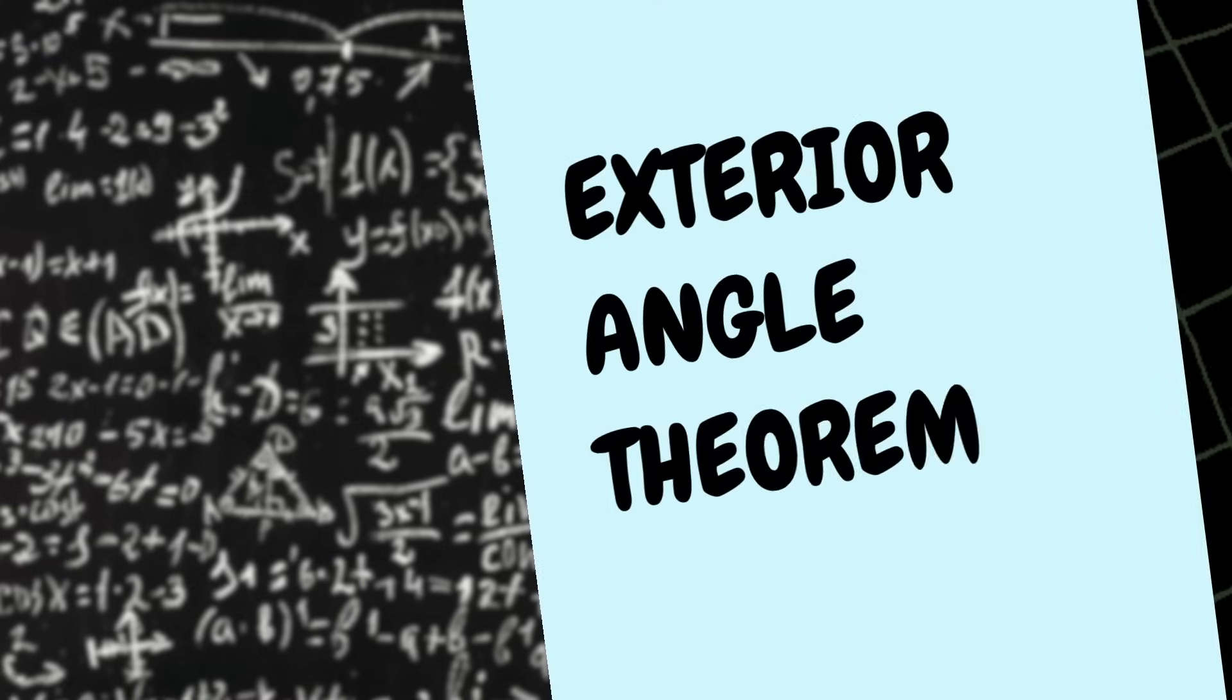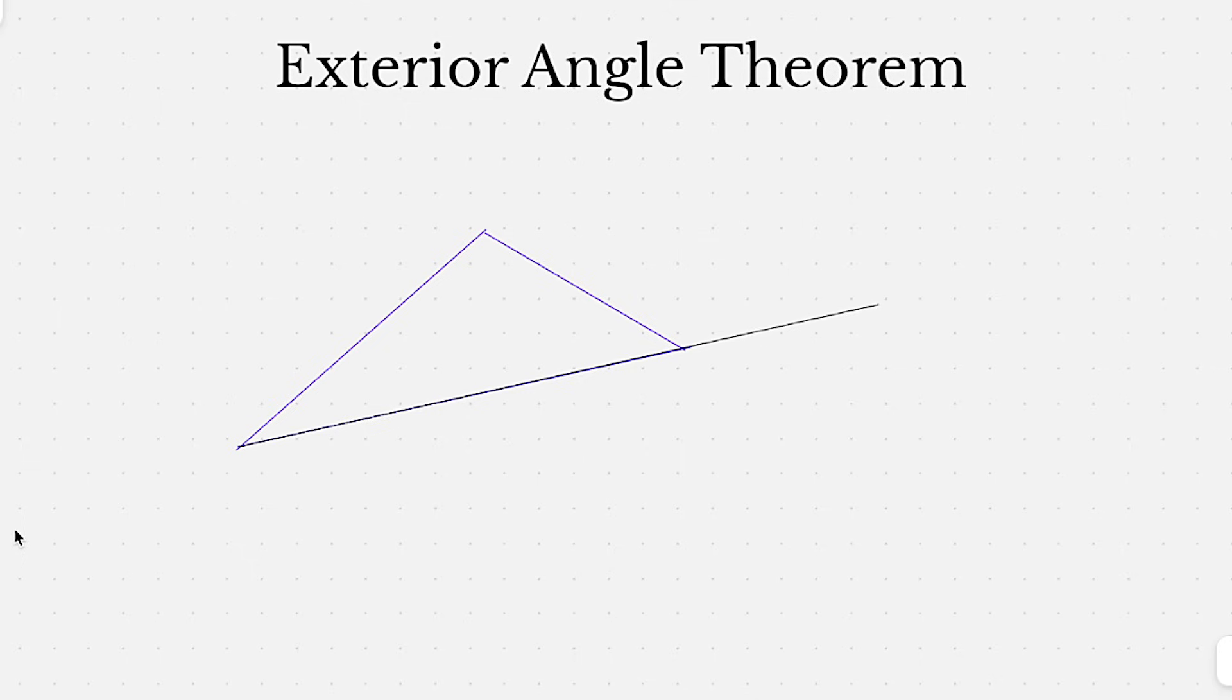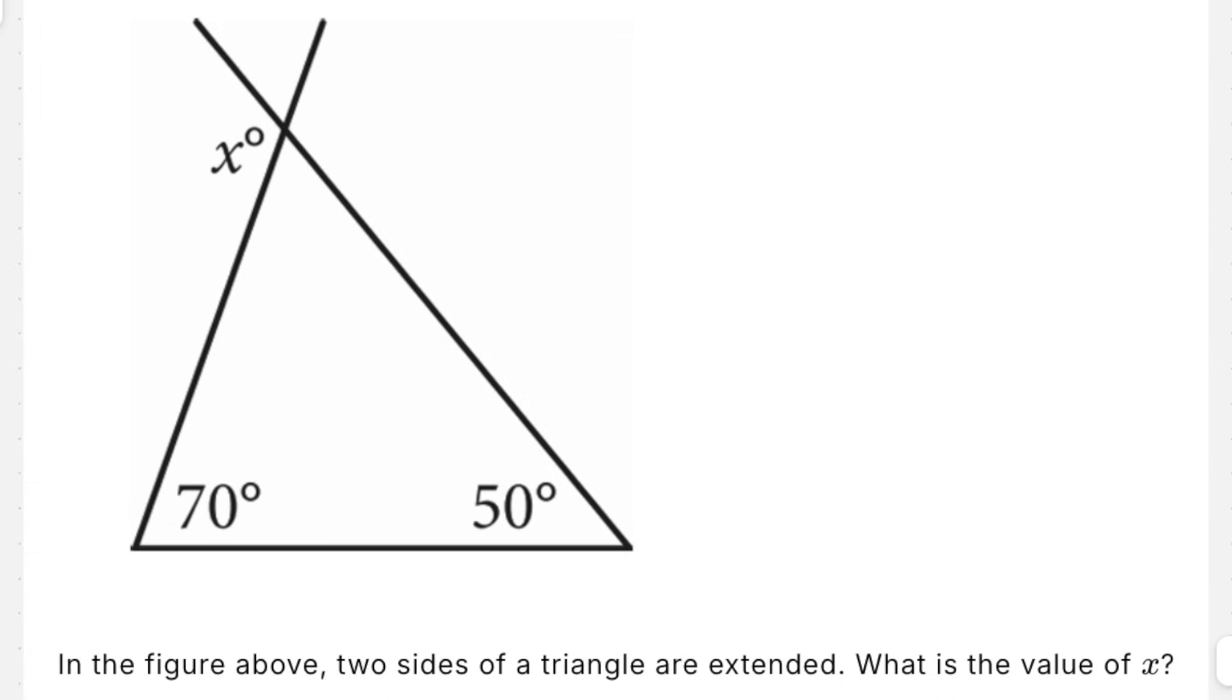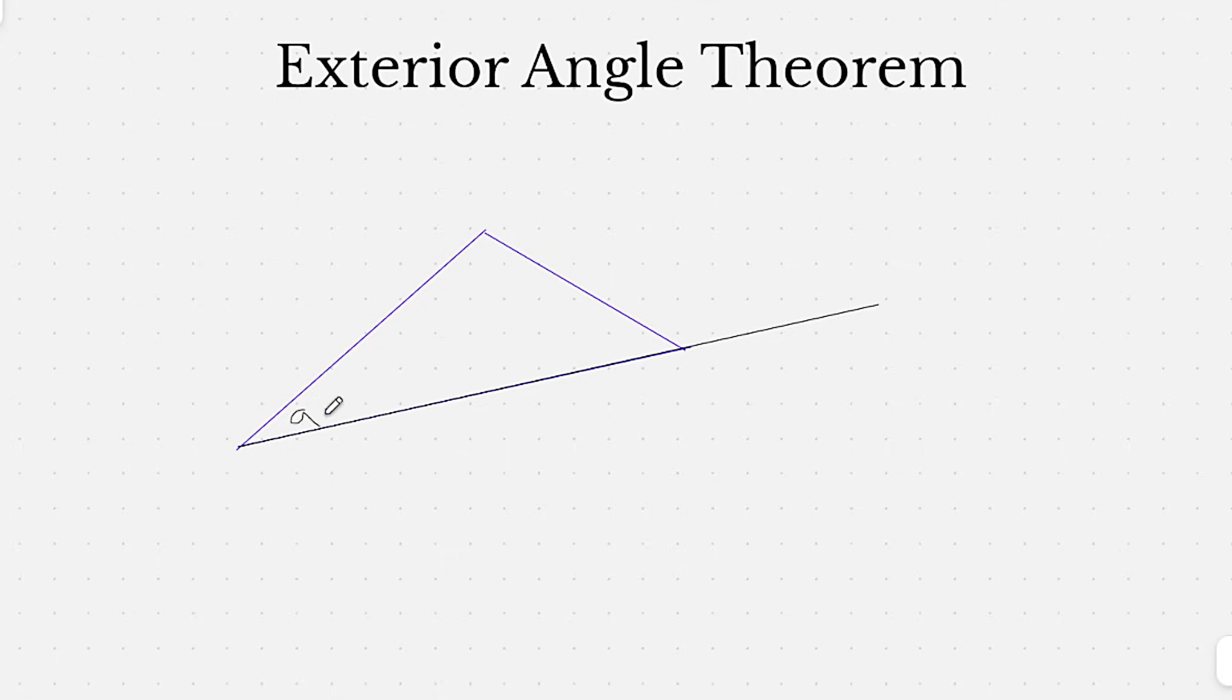It would also behoove you to know the exterior angle theorem. This is going to be helpful for questions like this one on the SAT. And basically, the exterior angle theorem is, if you have a couple of angles, let's say we have A, B, and C, the rule is the exterior angle of any one of these three angles is going to equal the other two added up. So let me actually show you what that looks like instead of just saying it. So let's say we have this angle here, we'll call this angle D. D is going to be equal to A plus B. And if you think about it, it makes sense, because a straight line is also 180 degrees. So if you take 180 degrees and subtract C, you're going to be left with A and B, because there's only 180 degrees in a triangle.